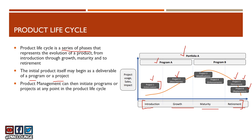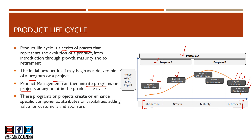Product management can initiate programs or projects at any point in the product lifecycle — like project five for retirement and project six for replacement. These programs or projects, initiated at different phases of the product lifecycle, create or enhance specific components, attributes, or capabilities, adding value for customers and sponsors. A program may encompass the full lifecycle of a product — keep this important point in mind as we move forward.